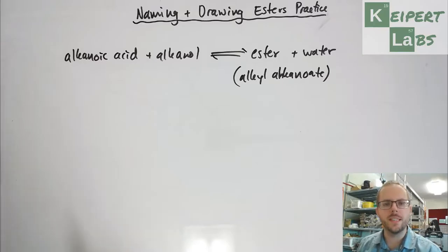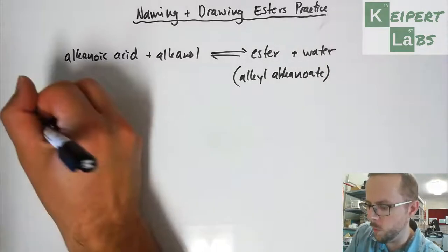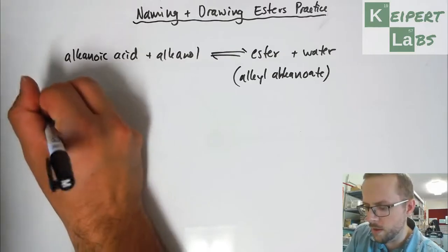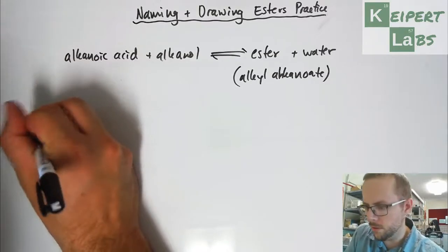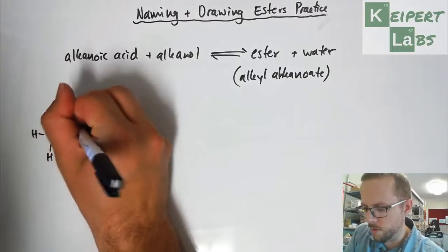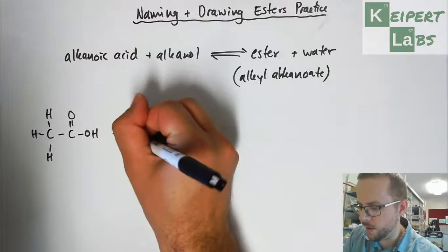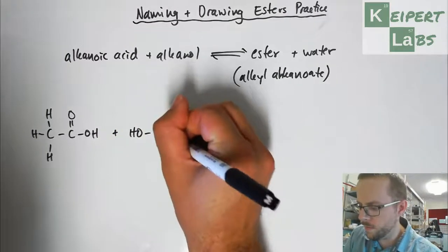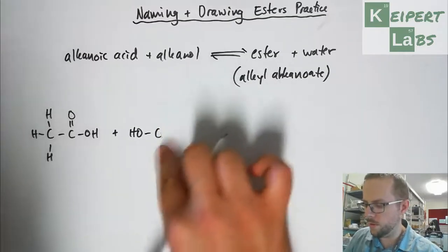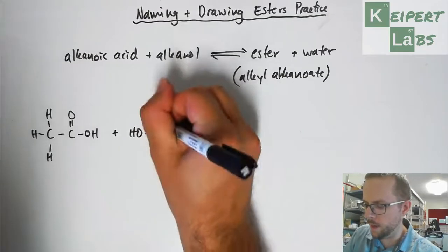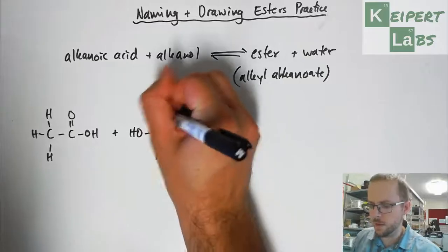And then also an example of naming. So the first question that we're going to look at is: what's the structure of the ester that forms from these two substances? We've got this alkanoic acid plus this alkanol. I'll actually split that out a little bit more so that it looks like that.